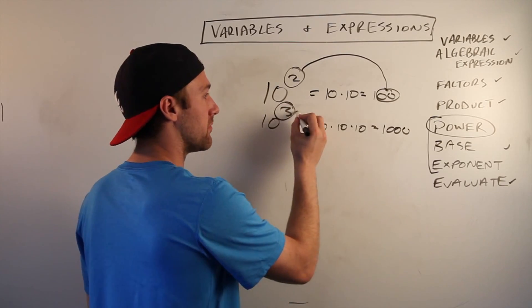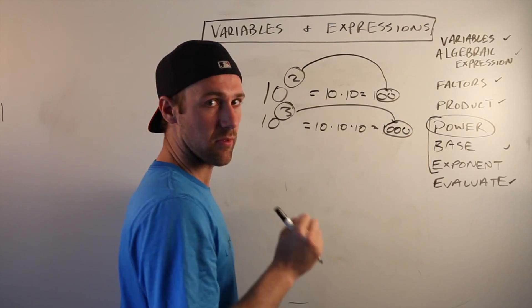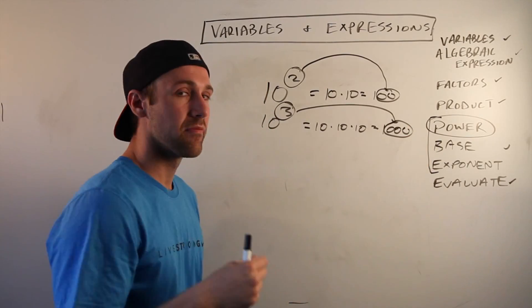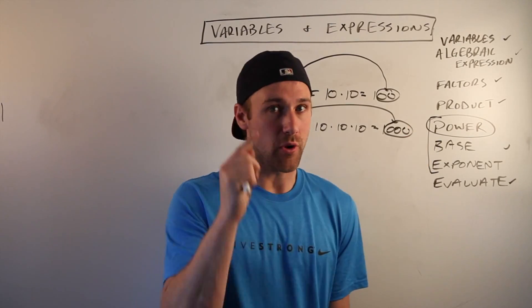10 cubed, how many zeros do you have? Three. So if you haven't caught on yet through your mind of deductive reasoning and just raw intelligence and beauty...